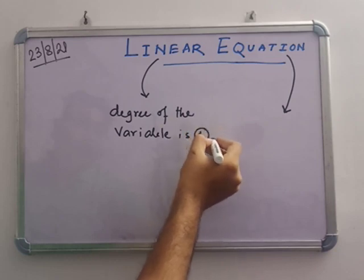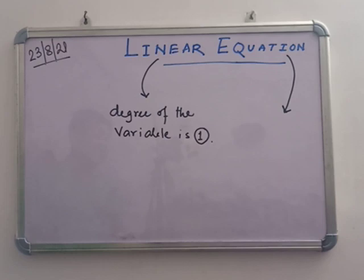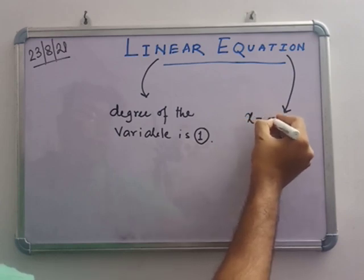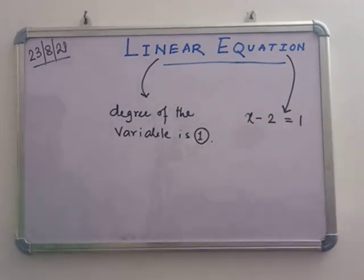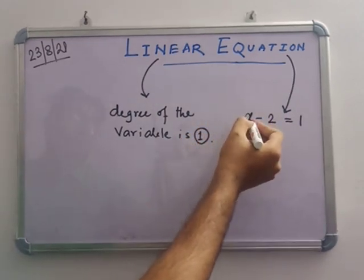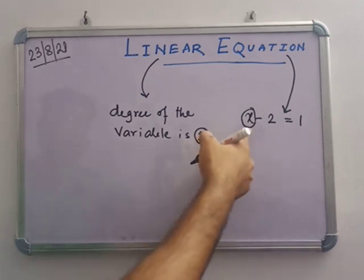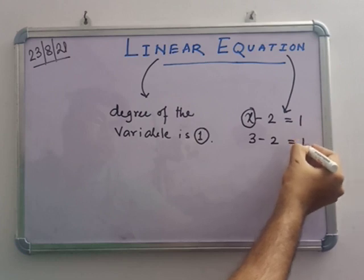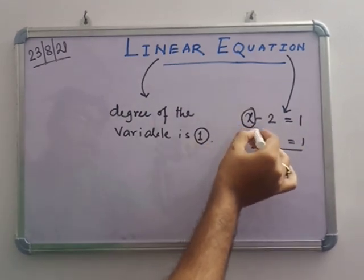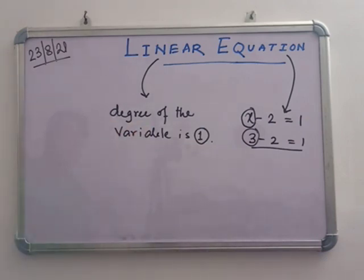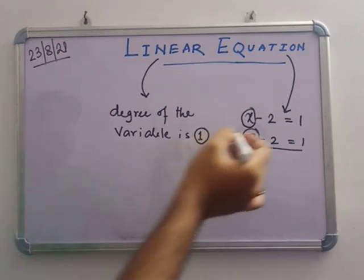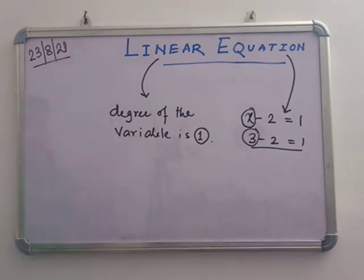When the degree of the variable is 1, that means this is a Linear Equation. Now, what is an equation? An equation means a statement of equality in one variable. For example, x minus 2 equals to 1. For some value of x, this gives 1. We know that if x equals to 3, then 3 minus 2 equals to 1. So the value of x is 3 here.